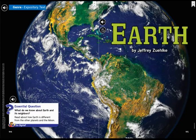Hi, 3rd grade. We are here with a new anthology text. The title of this anthology text is Earth, written by Jeffrey Zolke. The genre is expository text. Remember, an expository text is a text that teaches you facts and information about a specific topic. By looking at the photograph on the front cover and reading the title, can you guess what this expository text is going to teach us?